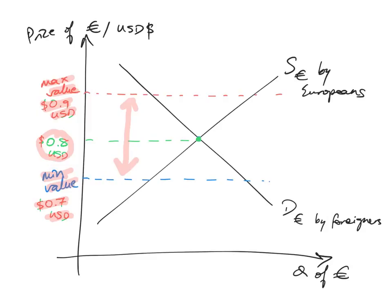If the value of the currency depreciates too much beyond the minimum value, the government interferes by trying to decrease the supply of the euro — buying back euros from the market — or trying to increase demand for the euro, maybe by raising interest rates to attract foreign investors. In this example we're looking at the market for the euro in terms of US dollars, with the quantity of the euro on the horizontal axis. The government sets a range and allows the currency to float within that range, but once the value goes beyond either the maximum or minimum, the government interferes by manipulating demand and/or supply of its currency.